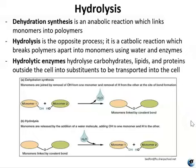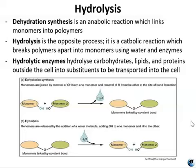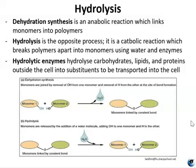Dehydration synthesis is the most common type of anabolic reaction, used to link monomers into polymers. Hydrolysis is exactly the opposite — it is a catabolic reaction which breaks polymers apart and forms monomers using water and enzyme. That's where the 'hydro' part comes in: water, and 'lysis' means to break. Hydrolytic enzymes hydrolyze carbohydrates, lipids, and proteins outside the cell into their substituents to be transported into the cell. So hydrolytic enzymes are exoenzymes performing catabolic reactions.